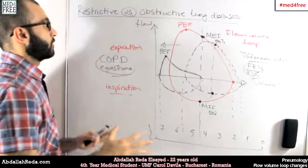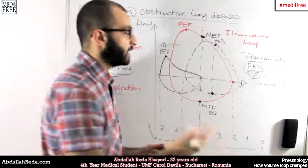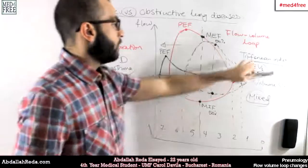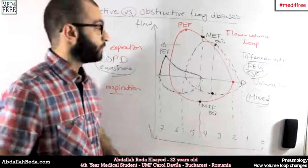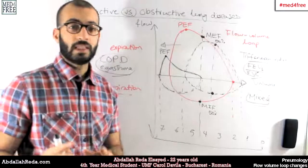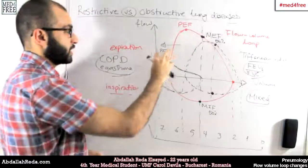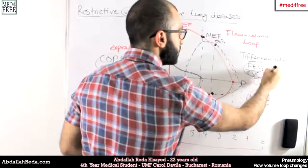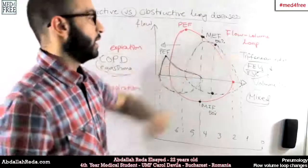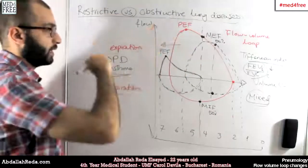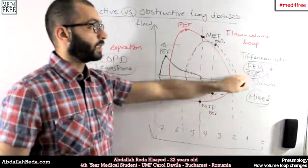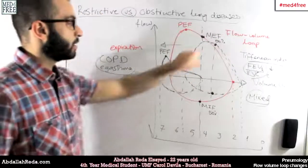That is the basic difference between obstructive and restrictive lung diseases — and in some cases we have mixed syndromes with both. In obstructive lung diseases, the vital capacity itself is not affected, but the FEV1 decreases because expiration is impaired. This leads to a decrease in the Tiffeneau index. In restrictive diseases, the Tiffeneau index remains the same because expiration and inspiration remain proportional, as in the normal case.